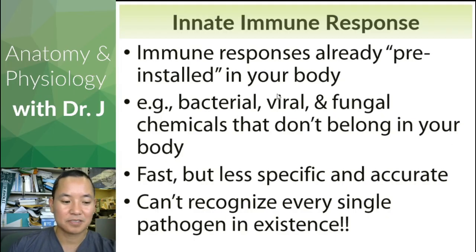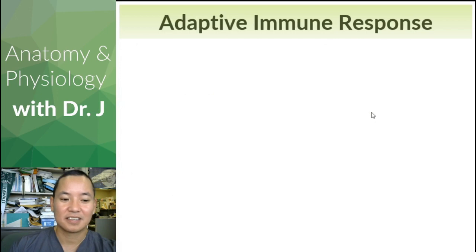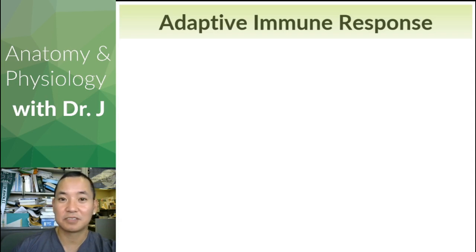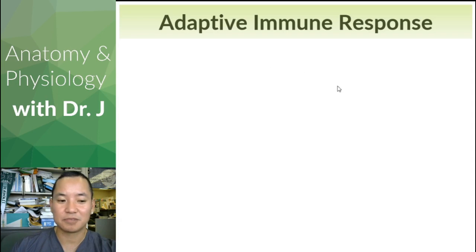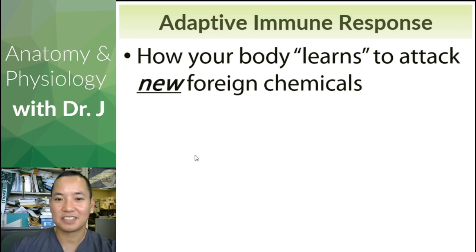So what — how do you defend against things that your innate immune response doesn't recognize? That's when you have your adaptive immune response. Just like you have to install new software based on your needs on your computer, same with your adaptive immune response — you have to start training your immune system to new things you encounter during your life that aren't already part of your innate immune system. This is how your body learns to attack new foreign chemicals that aren't part of our human evolution and experience.